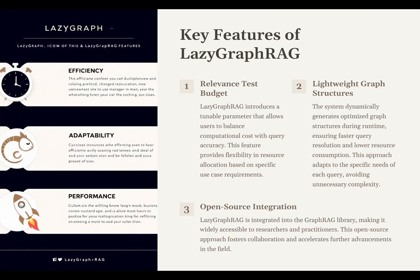LazyGraphRack also has this relevance test budget and you can actually control it. Think of it like setting a time limit for your detective assistant. You can tell the system how much effort you want it to put into finding the most relevant information. If you need a quick answer, you can set a really tight budget. But if you want to be extra thorough, you can give it more time to explore all those connections in the data.